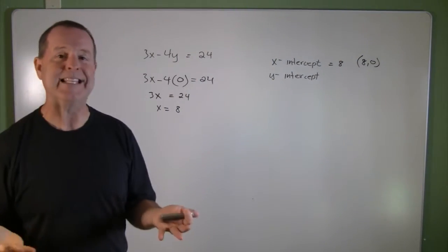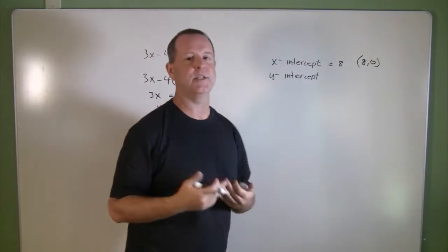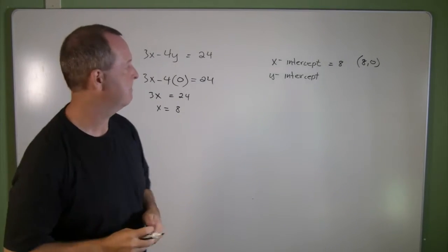And both of those mean the same thing. An x-intercept of 8 represents its coordinate pair of (8, 0).